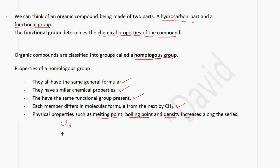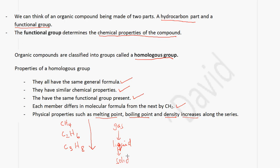It starts off with CH4, C2H6, C3H8 — the first three members of a particular homologous group. As you go down the group, the melting point will increase, the boiling point will increase, and the density also increases. The reason is that as you go down the homologous series, the strength of the attractive forces between the molecules increases. You will also note that there is a change from gas to liquid to solid as you go down the group.